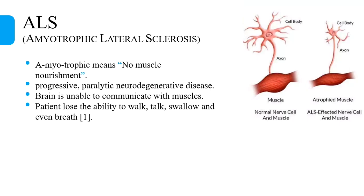ALS, or amyotrophic lateral sclerosis, is a progressive paralytic neurodegenerative disease that affects motor neurons in both the brain and spinal cord. The word amyotrophic literally means no muscle nourishment. The motor neurons die due to progressive degeneration, and the brain loses its ability to communicate with muscles.